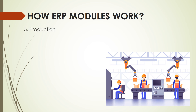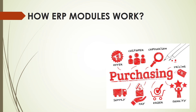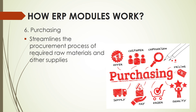In terms of production, it helps in planning and optimizing of the manufacturing capacity, parts, components, and material resources using historical production data and sales forecasting. These are the functions included for the production module in an ERP. In purchasing, it streamlines the procurement process of required raw materials and other supplies.